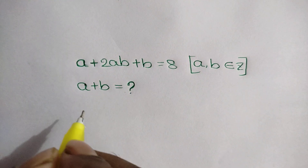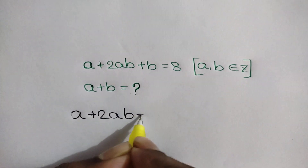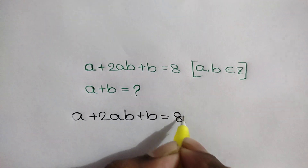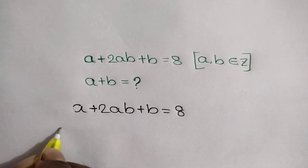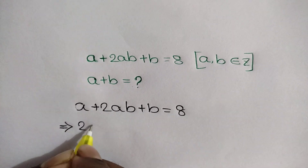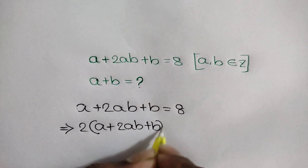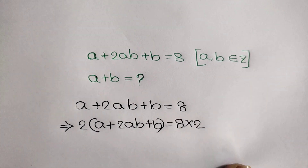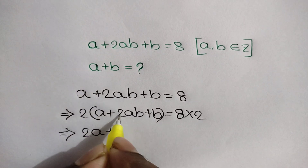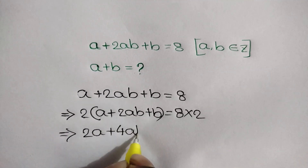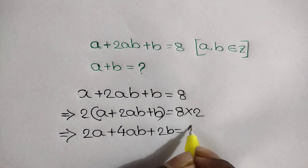We have given a plus 2ab plus b is equal to 8. At first, multiplying by 2, we can write 2a plus 4ab plus 2b is equal to 16.